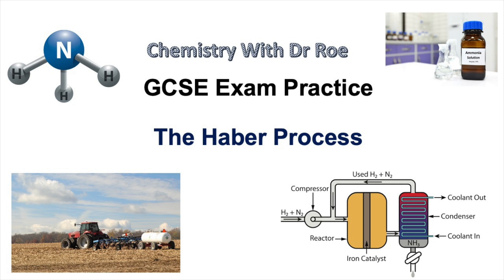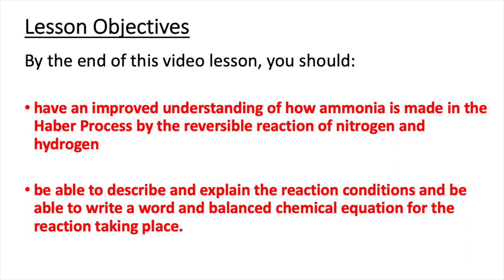Welcome to our latest video in our GCSE exam practice series. This video is on the topic of the Haber process. By the end of this video lesson, you should have an improved understanding of how ammonia is made in the Haber process by the reversible reaction of nitrogen and hydrogen, and you should also be able to describe and explain the reaction conditions and write a word and balanced chemical equation for the reaction.